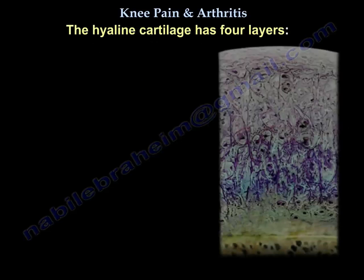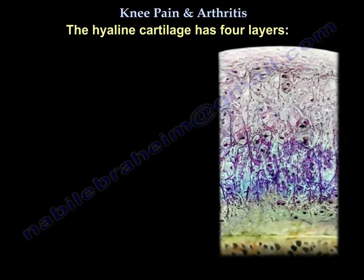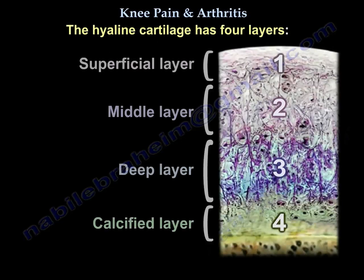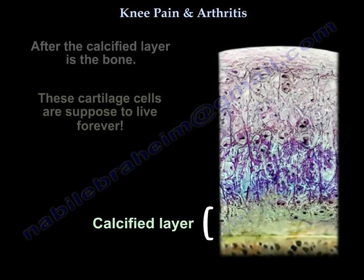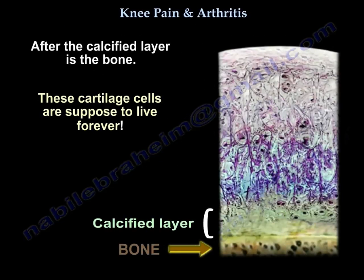The hyaline cartilage has 4 layers: the superficial, the middle, the deep, and the calcified. After the calcified layer, you'll find the bone.